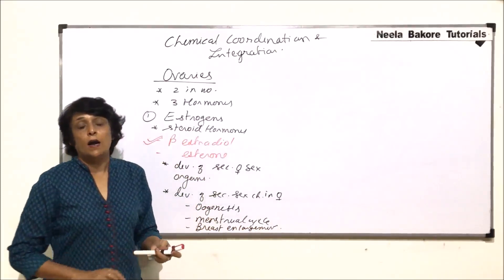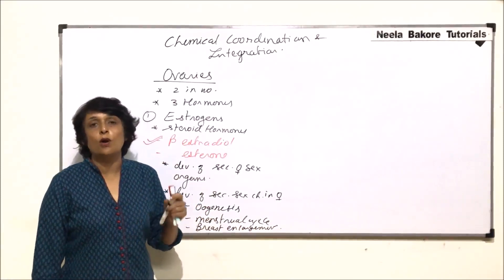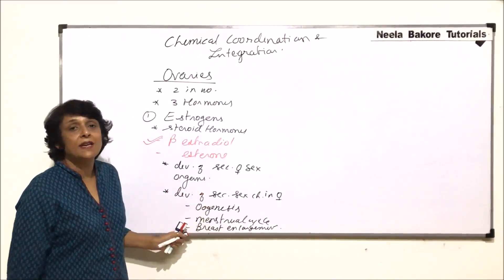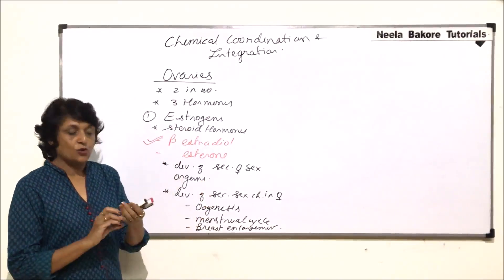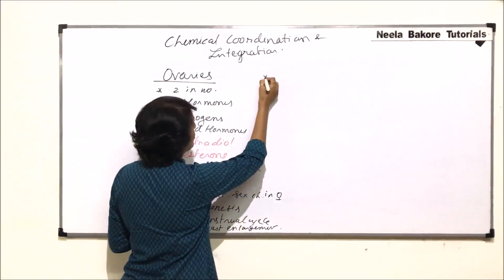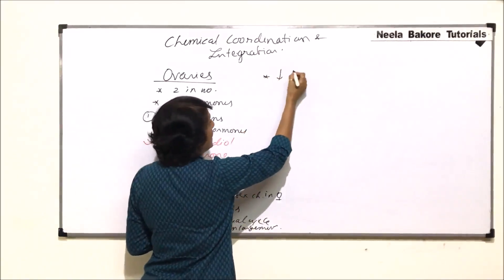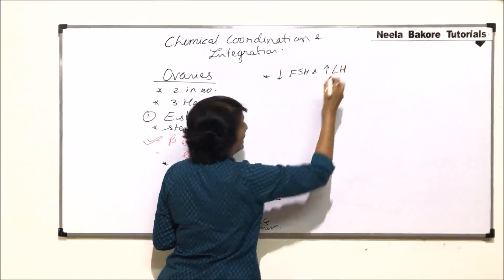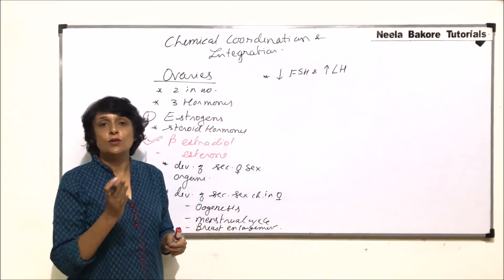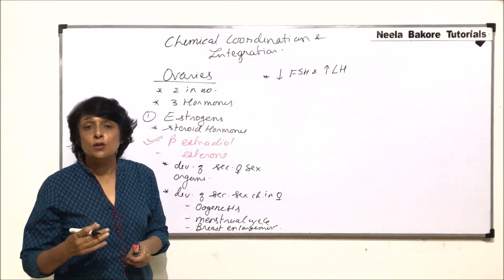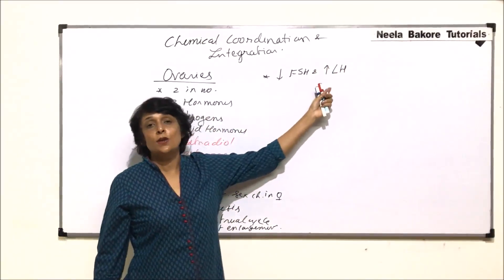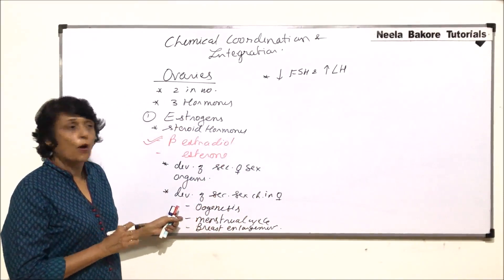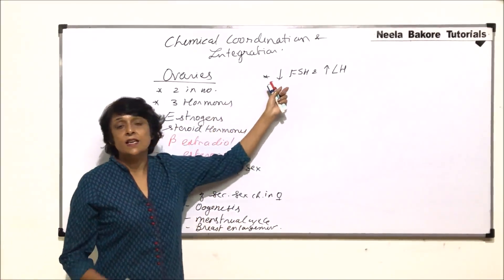Secondary sex characters in females also include development of female hair pattern and female-like voice. These secondary sex characters are controlled by estrogen. Another function is that estrogen decreases FSH secretion from the pituitary and increases LH secretion. The increase in LH secretion results in ovulation.